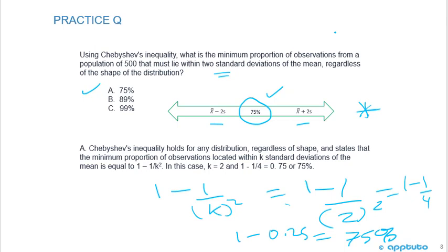Memorize it from the graph, similar to the normal, for one standard deviation, two standard, three standard deviations. But more importantly, I think it's good if you can just memorize that formula, 1 minus 1 over k squared. They're giving you the two standard deviations, k equals 2, solve it, easy question. And that's the end for this LOS. Thank you.